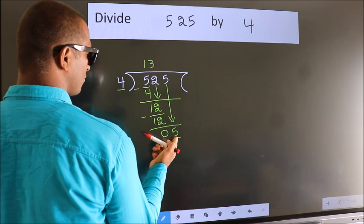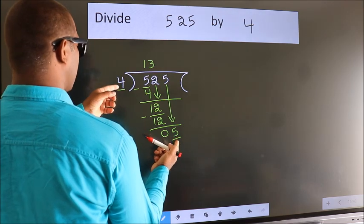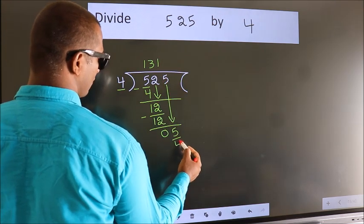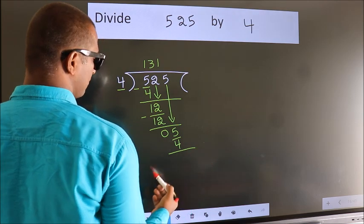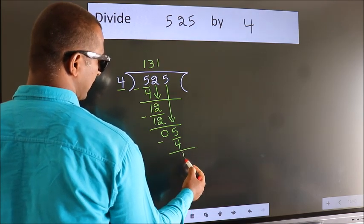A number close to 5 in the 4 table is 4. Once 4. Now, we subtract. We get 1.